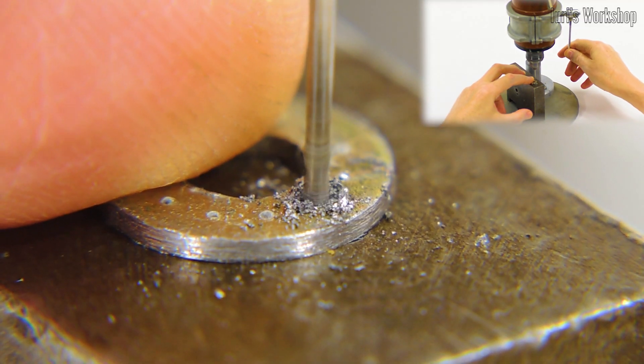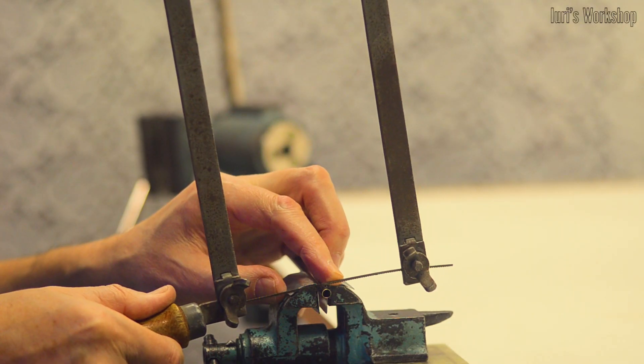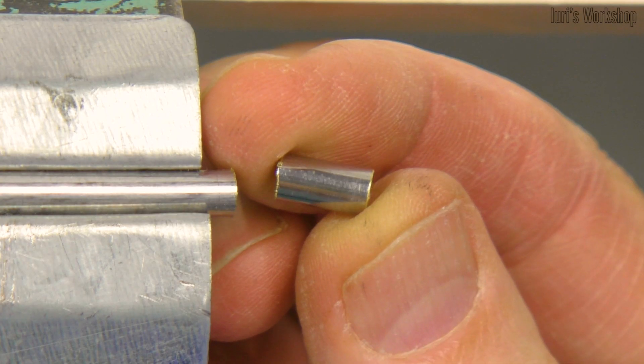Now we can drill holes and remove the burrs. We also need to cut off 10 mm from the 5 mm antenna section.